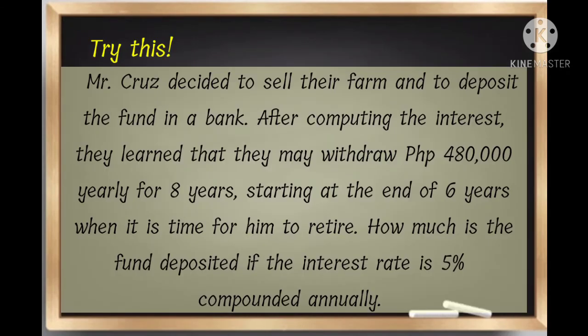Mr. Cruz decided to sell their farm and deposit the fund in a bank. After computing the interest, they learned that they may withdraw 480,000 pesos yearly for 8 years, starting at the end of 6 years when it is time for him to retire. How much is the fund deposited if the interest rate is 5% compounded annually?